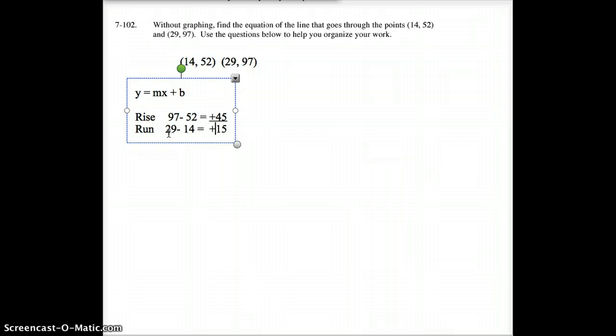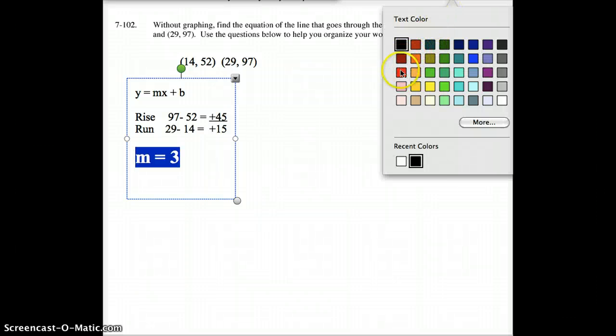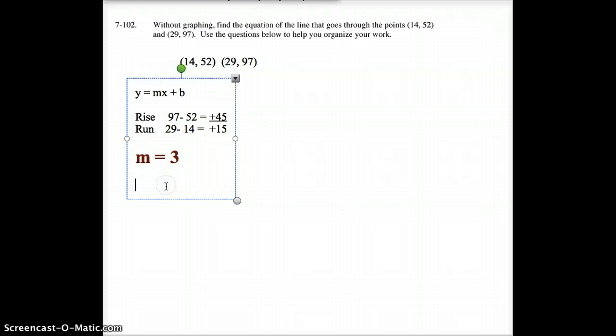Well, hold on here. What can we do to 45 and 15? Can't that simplify? It sure can. What is 45 divided by 15? If you said 3, you are correct. So my slope, or my m value, equals 3.